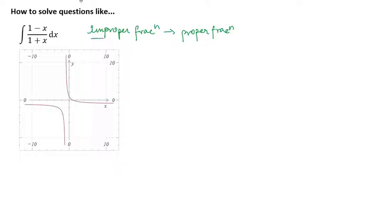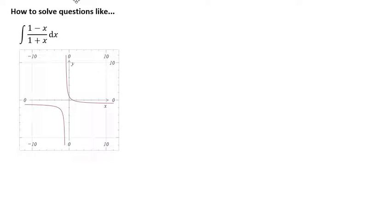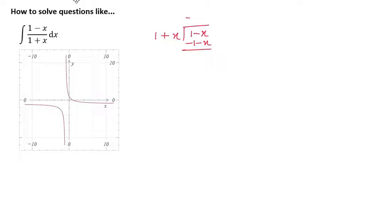How do we convert an improper fraction to a proper fraction? We can do it by dividing the numerator by the denominator. So let's use the long division method. We have to divide (1 minus x) by (1 plus x). We can see that if we multiply (1 plus x) by negative 1, we get the same coefficient for x.